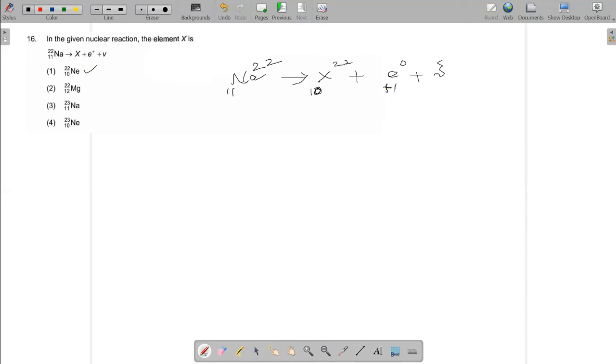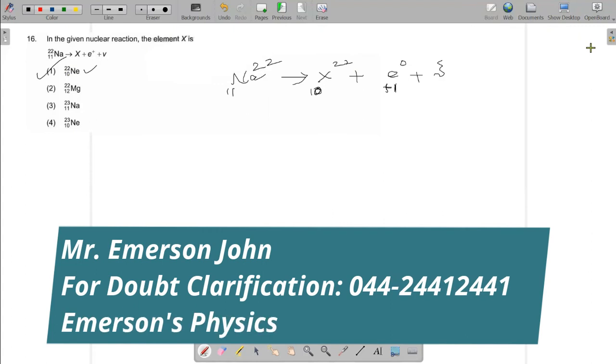So you will have positive charge, there is no change in mass number. Atomic number decreases by one. So in the equation, so the neon 22-10 is the correct. Thank you for listening. Please subscribe, Emerson's Physics.